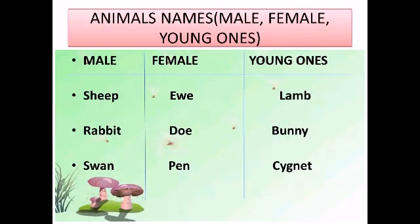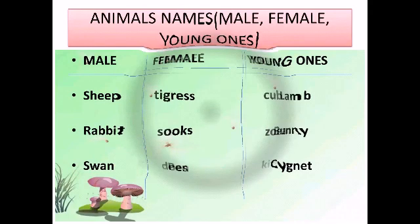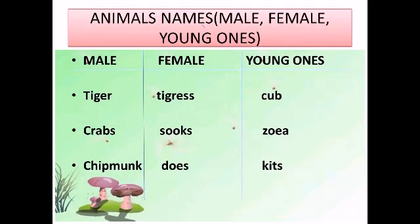Next we have sheep — young: lamb. Rabbit — female: doe, young: bunny. Next is swan — female: pen, young: cygnet. Next we have tiger — female: tigress, young: cub.